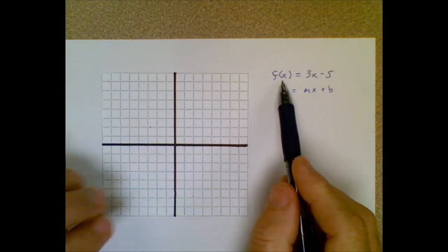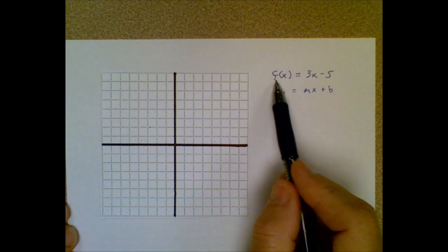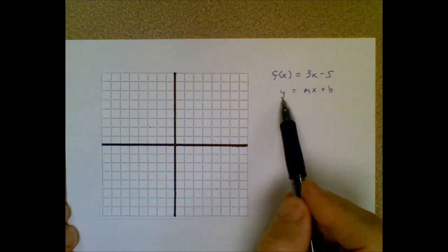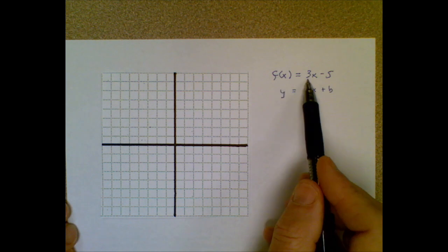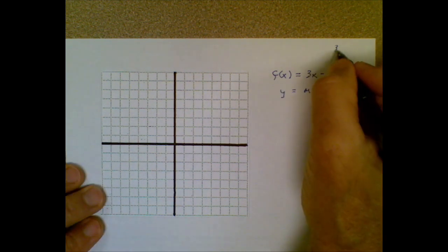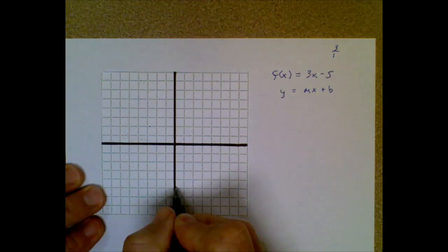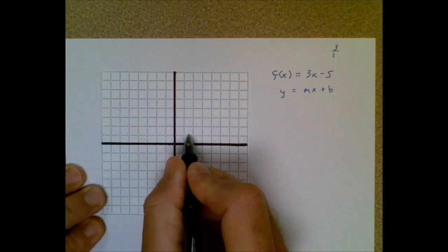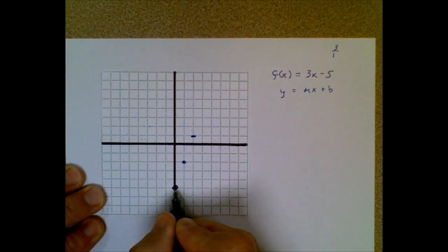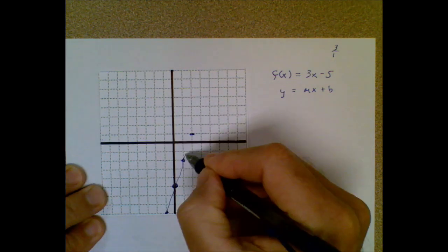If I wanted to graph this function, it's in y equals mx plus b form, because remember the only thing that's changed is f of x is a new symbol that we can use in place of y. So there's my y-intercept. There's my slope. I could call it 3 over 1. And so I start by plotting my intercept. And then I start counting up 3 over 1. Up 3, positive 1. Or I could go negative 3, negative 1. But either way, I'm on that same line.